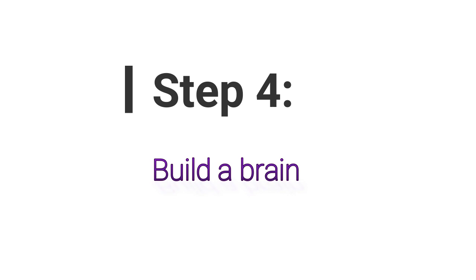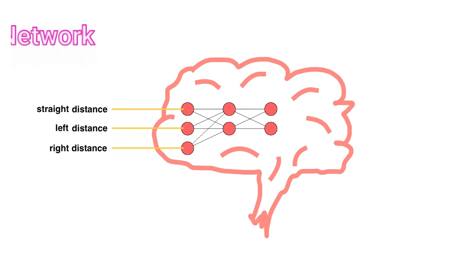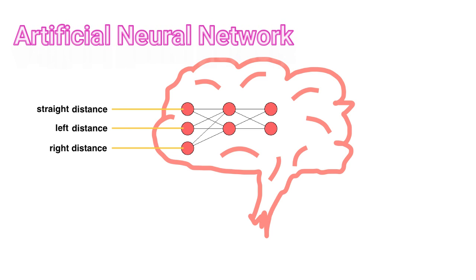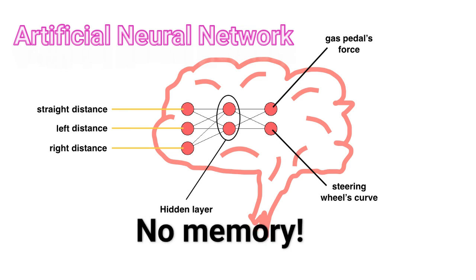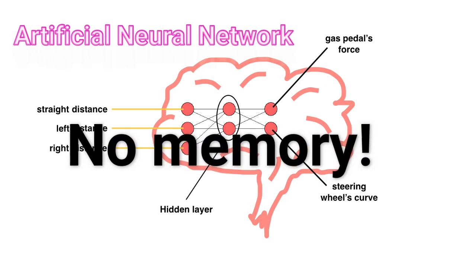In a fourth step, we need to introduce a brain to process the visual information and make proper decisions. A small artificial neural network will do this trick. The three distance measurements are processed over one hidden layer to two output neurons. The first regulates the gas pedal, and the second the steering wheel. Note that this kind of brain has no memory.